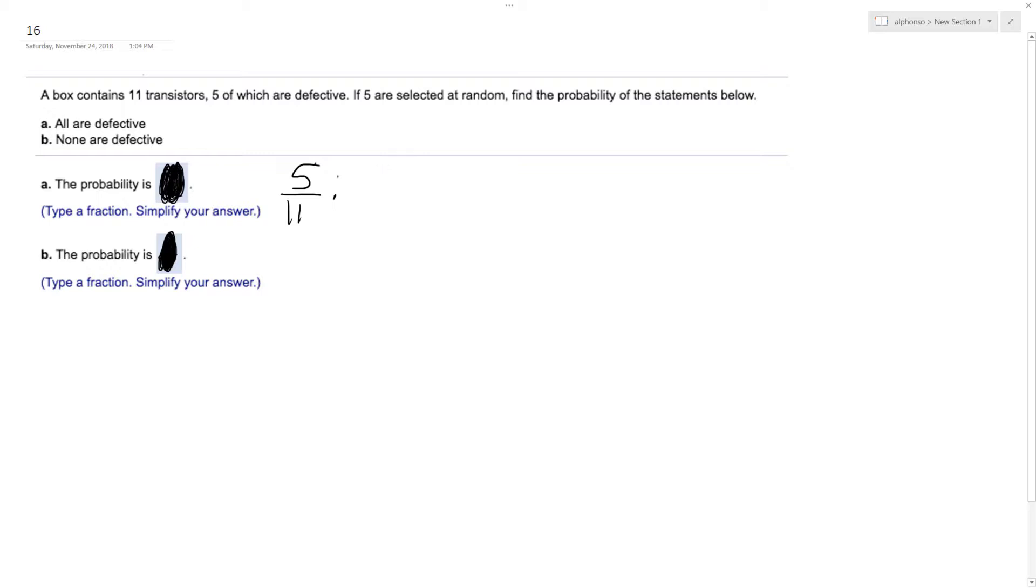And then one's removed, so one total is taken out of the box. And assuming that was defective, we get 4/10 times 3/9 times 2/8 times 1/7.